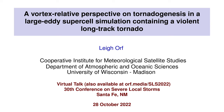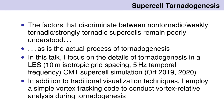Hello everybody. Today I'm going to talk about some new analysis of a 10-meter supercell simulation that produces an EF5 tornado. It's very clear from this conference that the factors that discriminate between non-tornadic, weakly tornadic, or strongly tornadic supercells remain poorly understood, as well as the process of tornado genesis. In this talk, I'm going to focus on the details of tornado genesis in an LES simulation of a supercell done with CM1.